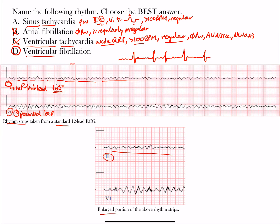Sinus tachycardia is also not correct. Remember, in sinus tachycardia you have normal complexes — a P wave followed by a QRS complex. In this case it would be called an RS complex because it consists of an R wave and an S wave, followed by a T wave.